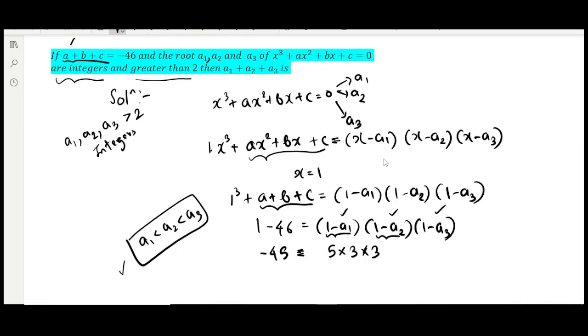To make all roots distinct—which should be mentioned here—if we consider this case, then 1 - a3 will be the least value because a3 is the highest. Since a1 is the least, 1 - a1 will be assigned as 5, and 1 - a2 will be assigned as 3.